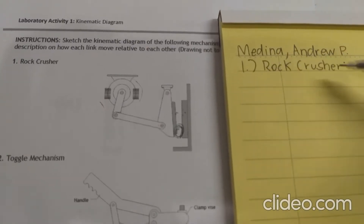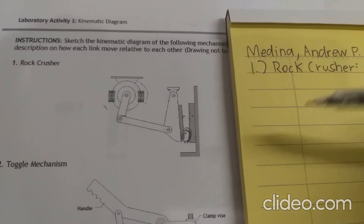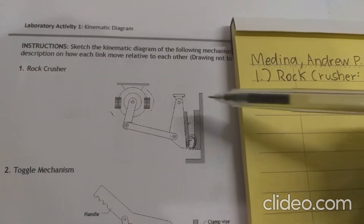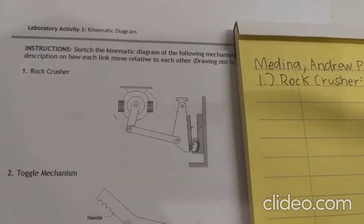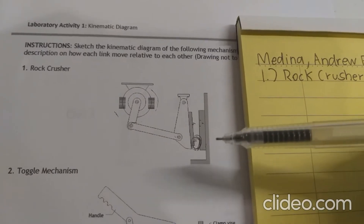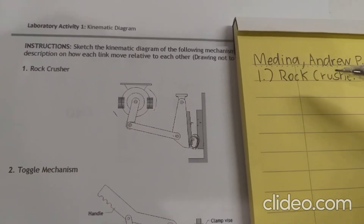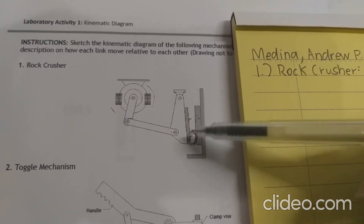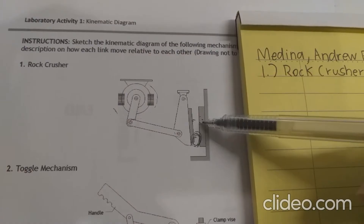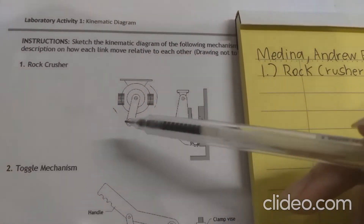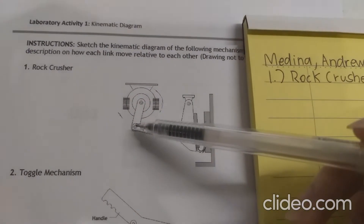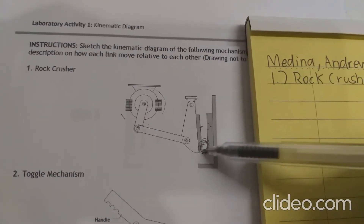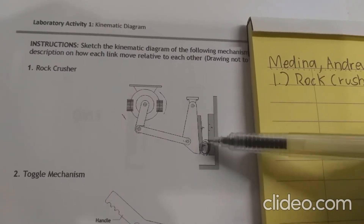The first mechanism we have is the rock crusher. Before we make a kinematic diagram — which is basically just a simplified illustration of what this object does and how it moves — we have to first look at the purpose of this mechanism. As the name implies, it crushes materials that we can assume are placed in between these two plates. Its purpose is to transfer mechanical energy from this point to this point and eventually crush materials placed here.